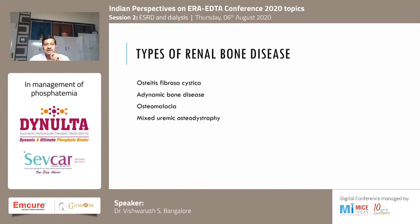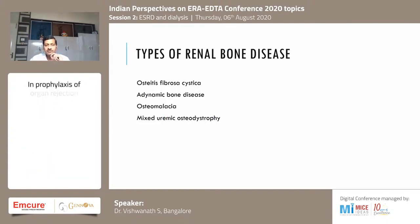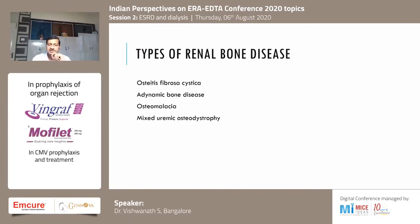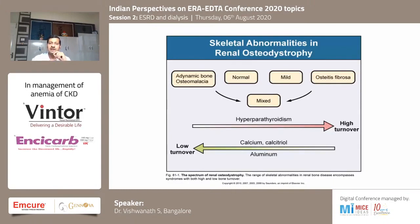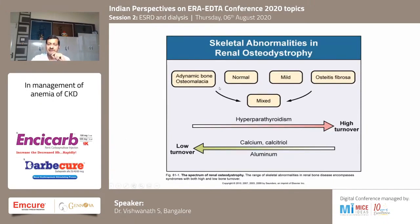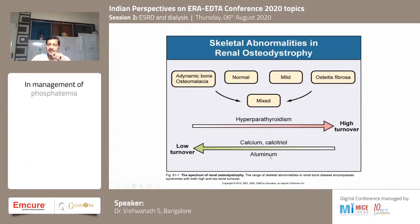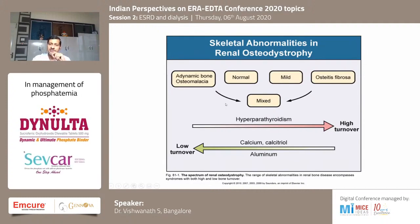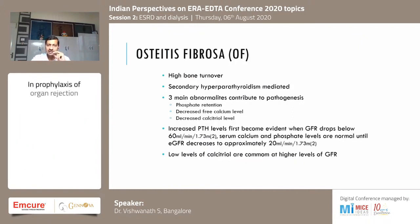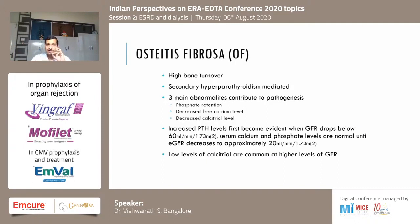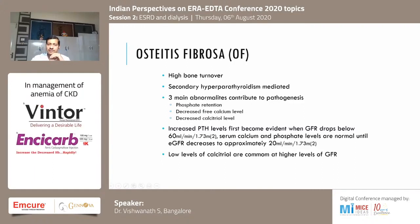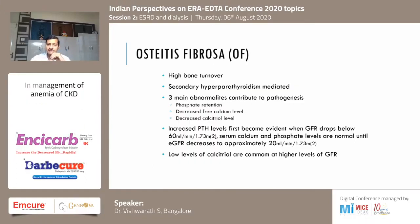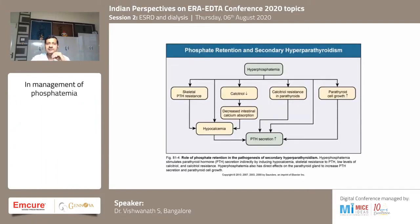Classification of renal bone disease includes mainly osteitis fibrosa cystica, adynamic bone disease which is increasing in recent times, osteomalacia which is less seen in CKD patients, and mixed uremic osteodystrophy. The pathogenesis starts with adynamic bone disease and can vary between normal and osteitis fibrosa depending on interventions. Secondary hyperparathyroidism leads to osteitis fibrosa because of phosphate retention, decreased bioavailable calcium, and decreased calcitriol, usually starting when GFR drops below 40 ml.